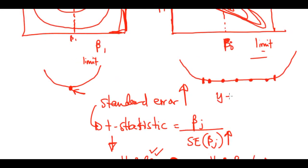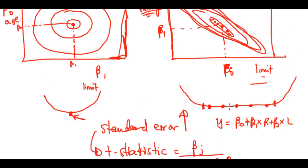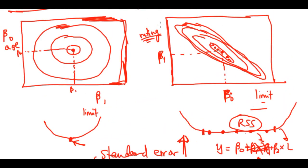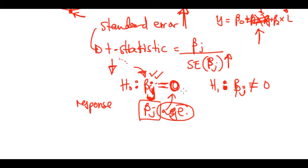In our model, y-hat is given by beta-one times rating plus beta-two times limit. If these are collinear, we will have many combinations of rating and limit coefficients that give the lowest RSS. That uncertainty increases the standard error, the t-statistic falls, and we might mistakenly conclude rating is not important and remove it from the model — when actually it was.